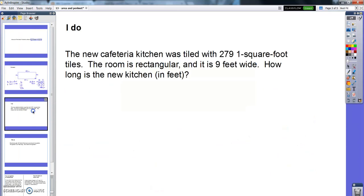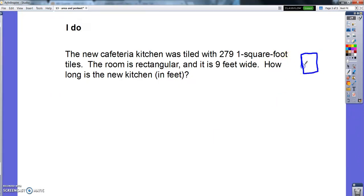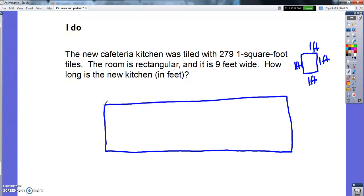So I'm going to switch that up a little bit today. So let's look at a problem like this. The new cafeteria kitchen was tiled with 279 one square foot tiles. So if you imagine these tiles, 279 of these one square foot tiles makes up the new cafeteria floor. The room is rectangular and it is 9 feet wide. How long is the kitchen?